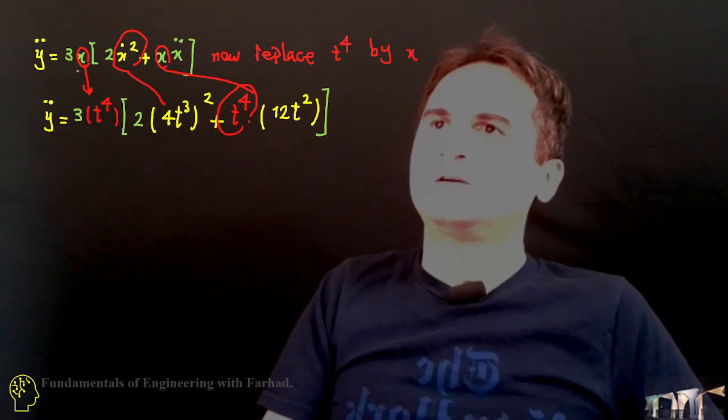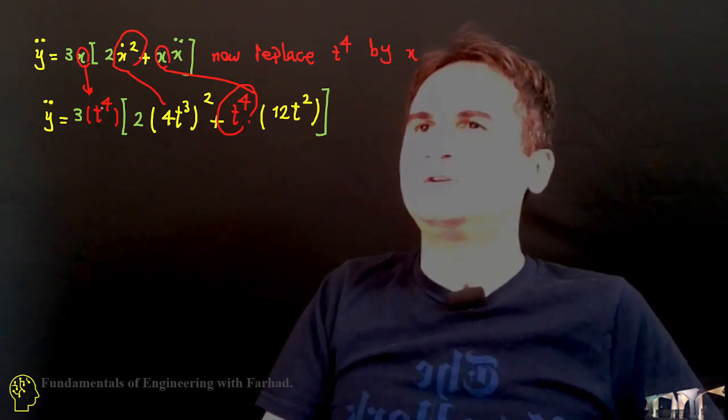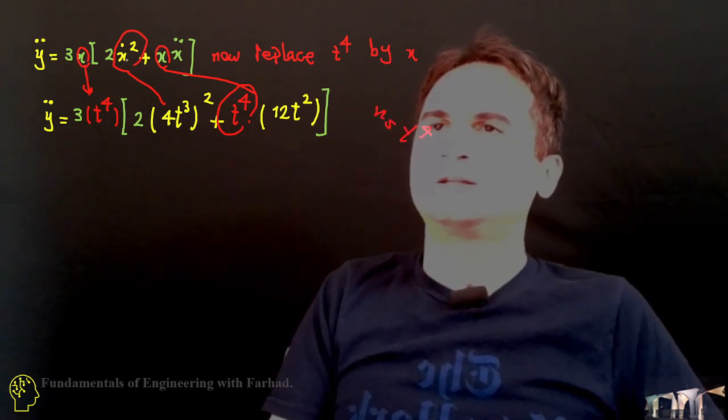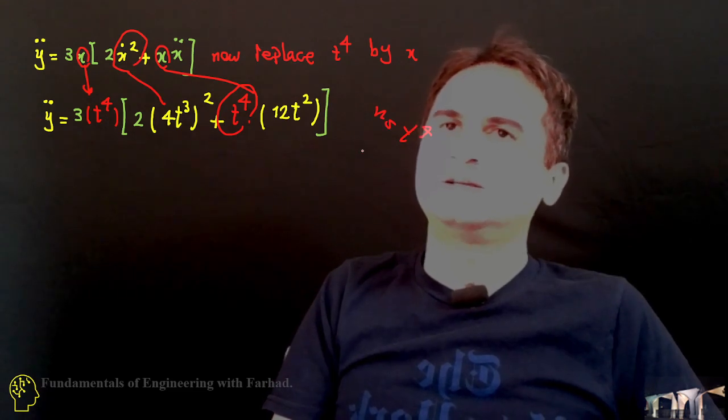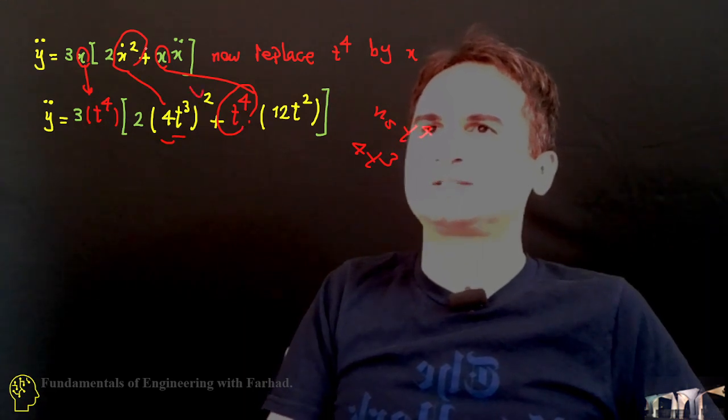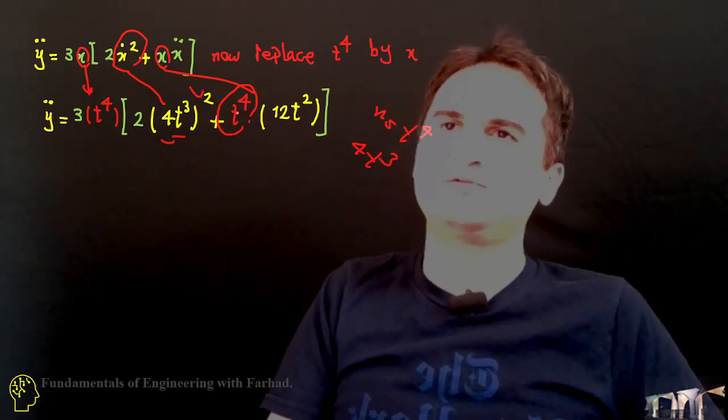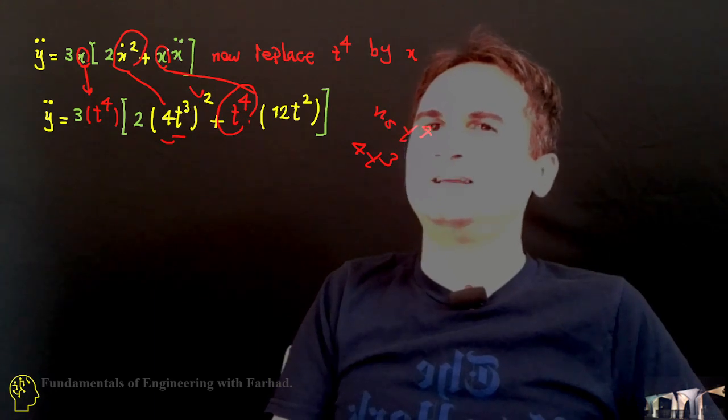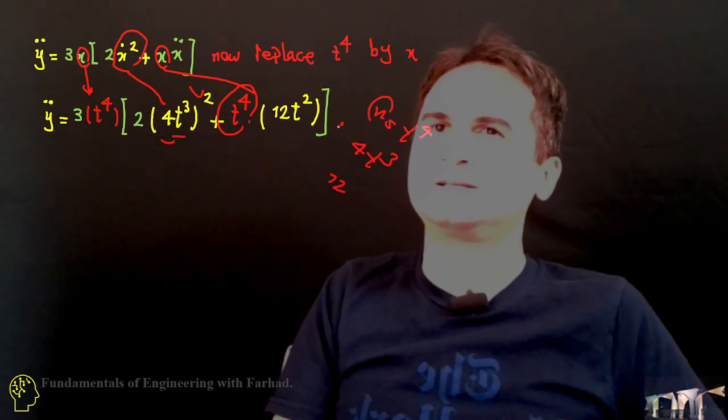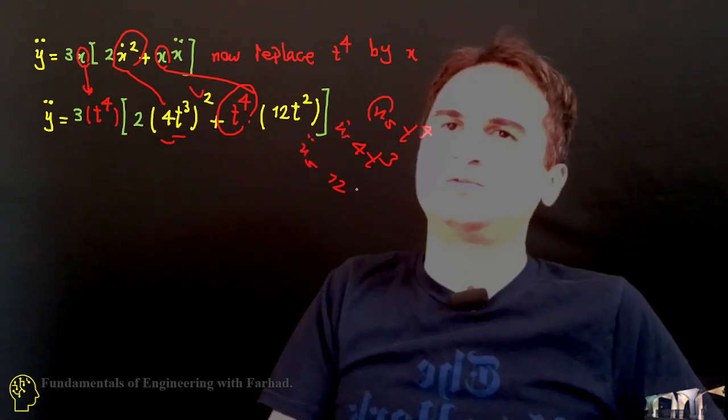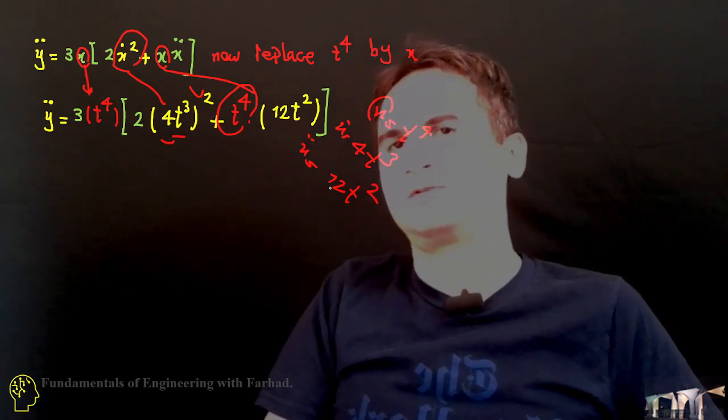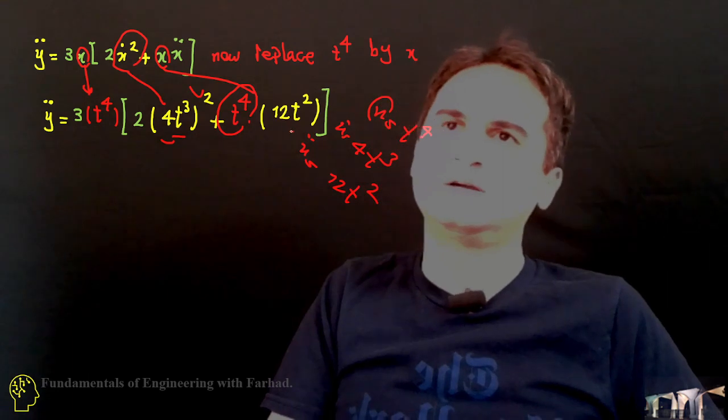So, just 3x would be 3 times t to the fourth. If x is t to the fourth, then x dot is 4t cubed. That's 4t cubed then squared plus x then t to the fourth times x double dot. That's 12. This is x, this is x dot, this is x double dot. That's 12t to the fourth, t cubed, t squared, 12 times t squared over here.